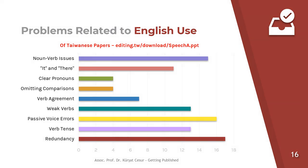Poor language was the major cause of rejection. What about these language problems? Problems related to English use include redundancy — using the same things again and again — verb and tense agreement errors, passive voice errors, noun and verb issues, and unclear pronouns or omitted comparisons. These are the problems that can be seen as language problems.